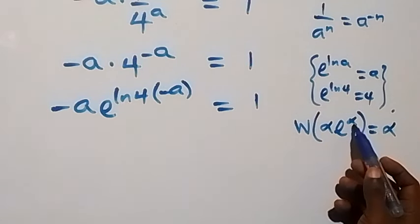Then here we have W of minus a ln 4, times exponent of minus a ln 4. Following the W function pattern, this reduces to minus a ln 4, which equals W of ln 4. From here, we can write this as minus a ln 4 equals W of ln 2 squared, since we can write 4 as 2 squared. So we have minus a ln 4 equals W of 2 ln 2.